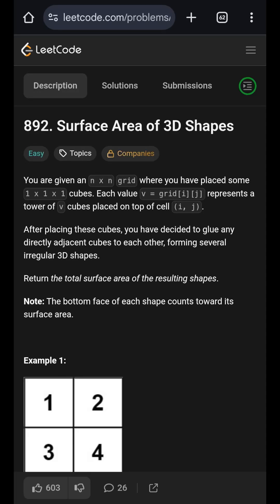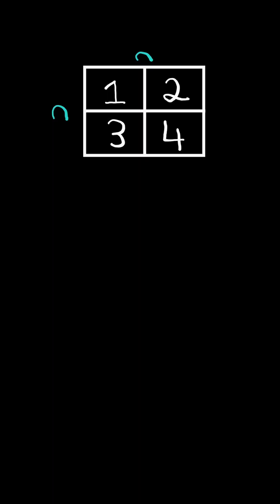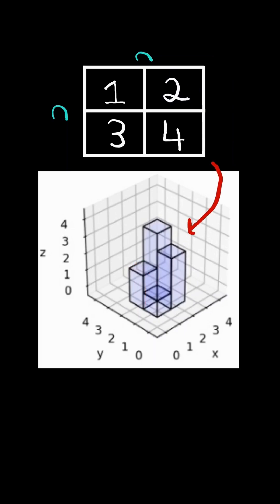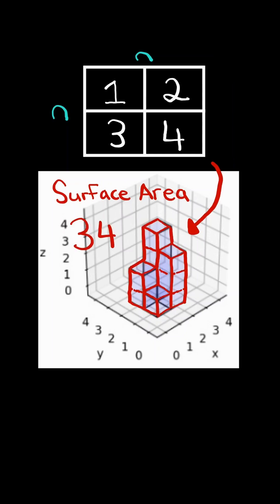Surface Area of 3D Shapes. Given an n-by-n grid, this grid creates a 3D shape where each element in the grid represents how many 1×1 cubes we stack. For example, for the element 2, we are stacking two 1×1 cubes on top of each other. We continue this process and glue all the cubes side-by-side, creating a 3D shape. Return the total surface area of the 3D shape — note the bottom face counts as well. In this case, the total surface area is 34.